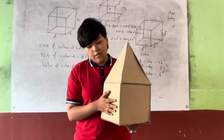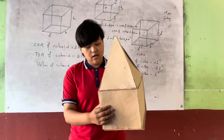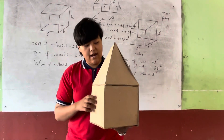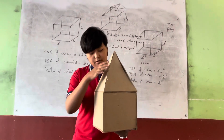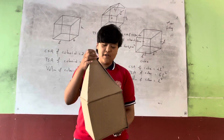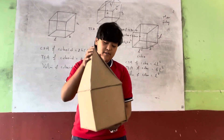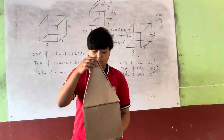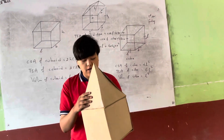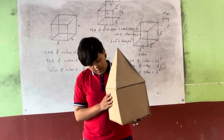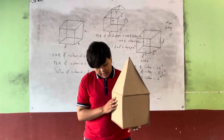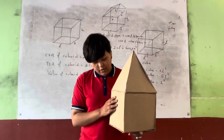At the bottom we can see a cube and at the top of the cube there is a pyramid. It is enclosed by four triangles and for finding the TSA of this solid,